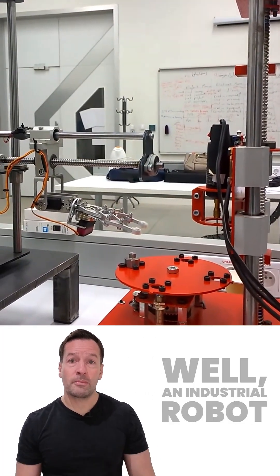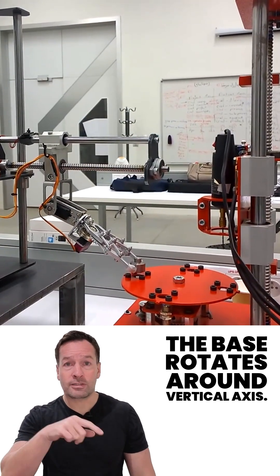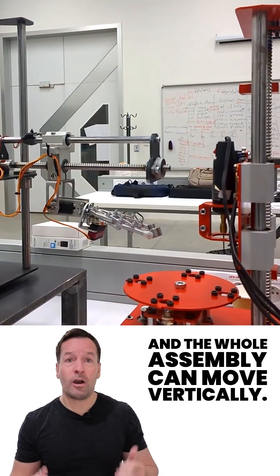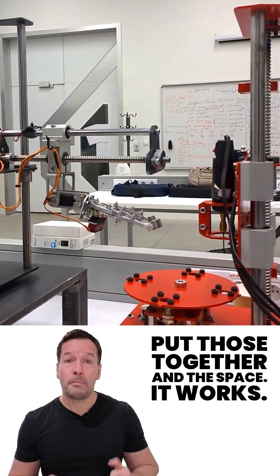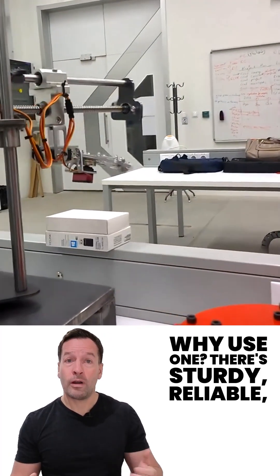So what is it? Well, an industrial robot that works in a cylindrical coordinate system. The base rotates around a vertical axis. The arm extends or retracts like a telescope, and the whole assembly can move vertically. Put those together and the space it works in looks like a cylinder. No surprise there. Why use one?